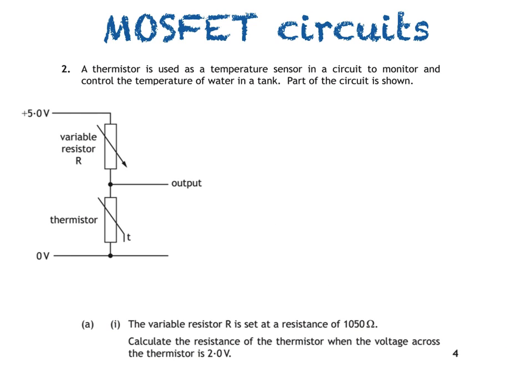This isn't the full circuit that we'll come to later — this is just a voltage divider. We'll call the variable resistor R1 and the thermistor R2. In a voltage divider, the supply voltage — 5 volts in this case — is divided between the two resistors. So we have voltage V1 across the top resistor, the variable resistor, and V2 across the bottom resistor, the thermistor. These quantities are linked by the equation V1 divided by V2 equals R1 divided by R2, so the ratio of the voltages equals the ratio of the resistances.